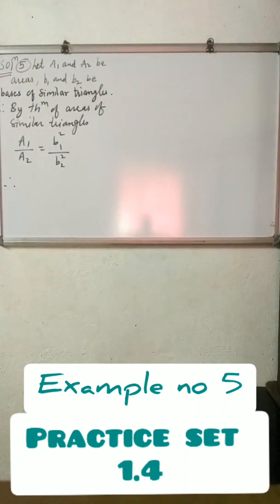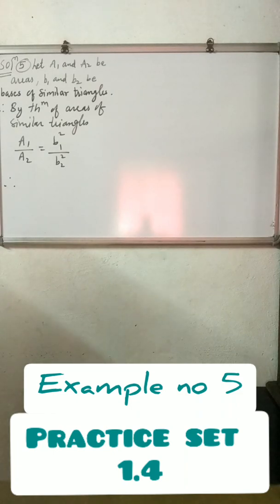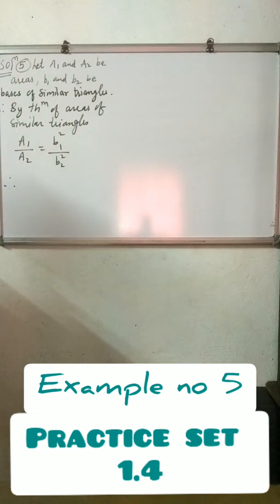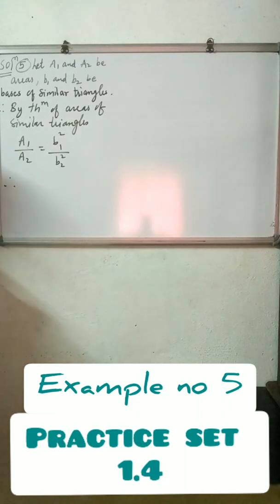Fifth example: the areas of two similar triangles are 225 square centimeters and 81 square centimeters. If the side of the smaller triangle is 12, then find the corresponding side of the bigger triangle. Let A1 and A2 be the areas and B1 and B2 be the bases of the similar triangles. Let A1 be the area of the big triangle and B1 be the base of the big triangle. By the theorem of area of similar triangles: